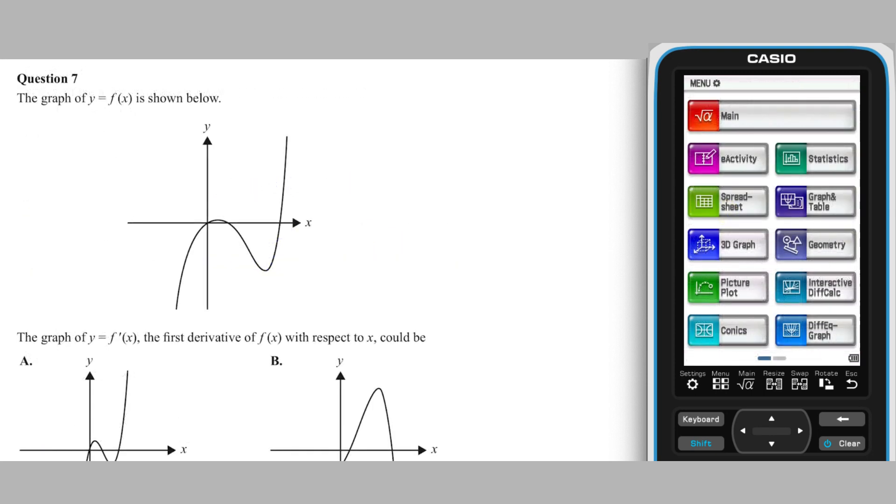Question 7 asks which of the five graphs provided could represent y equals f dashed, based on the graph of y equals f of x that has been provided.